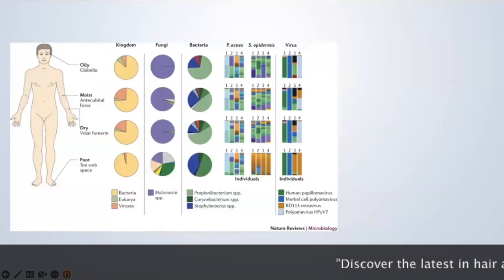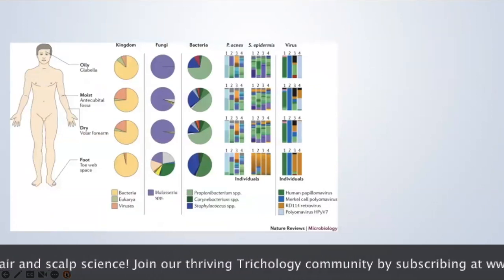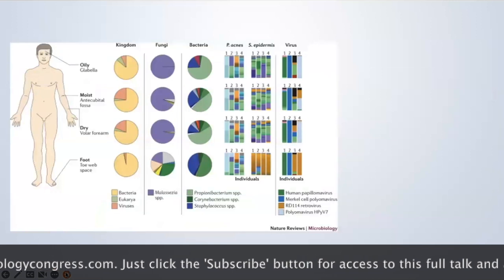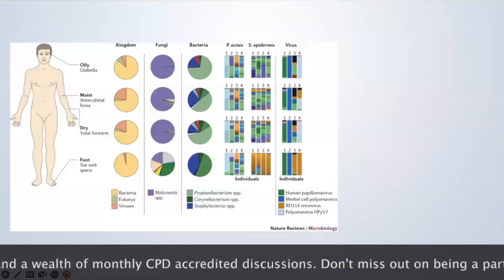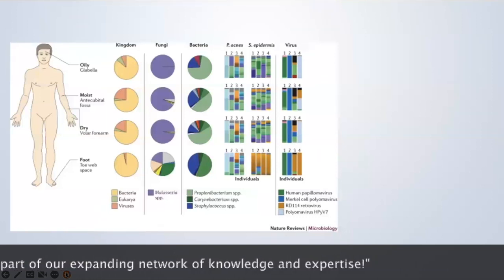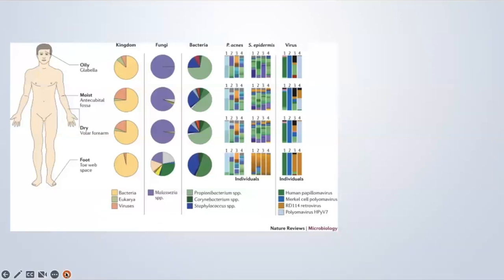The microbiome on the skin isn't one size fits all. Our skin is very different in different sites of the body. So we have oily skin — our face, where we have large sebaceous glands. We have dry skin, so the forearms would be classed as dry. And then our feet and hands, where we don't have sebaceous glands but we have lots of sweat glands — these are described as moist. And you can see, by just looking at the bacteria and the fungi, how very different they are between the different body sites. Some body sites have a predominance of particular bacteria like P. acnes or P. epidermidis, and this will vary depending upon what the skin produces.